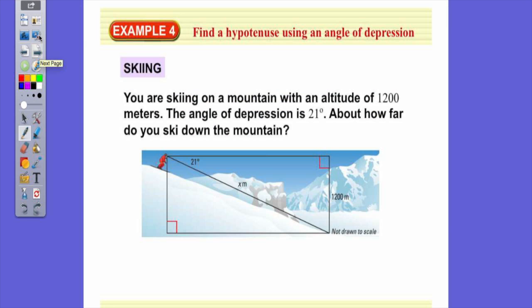So we're going to look at some real-world problems. Who wants to read to me about skiing? You are skiing on a mountain with an altitude of 1,200 meters. The angle of depression is 21 degrees. About how far do you ski down the mountain?